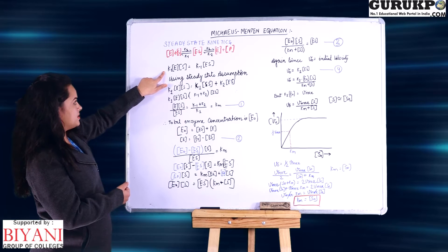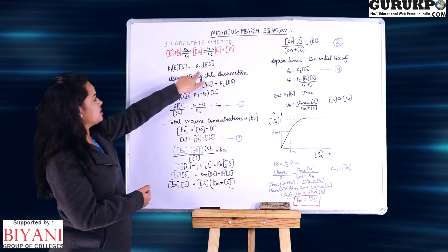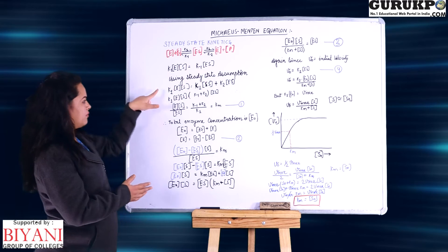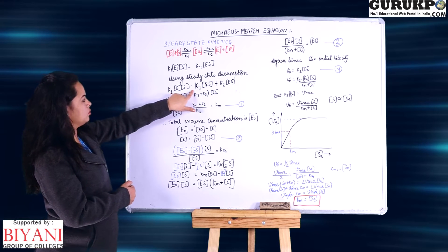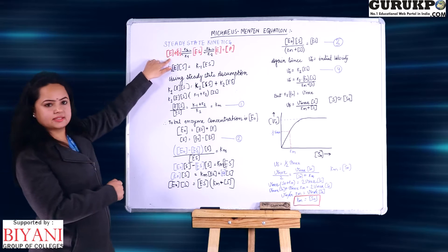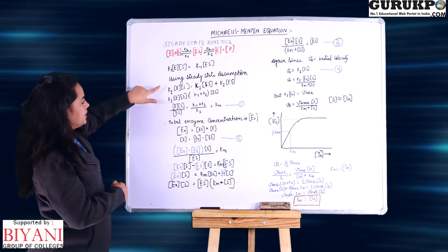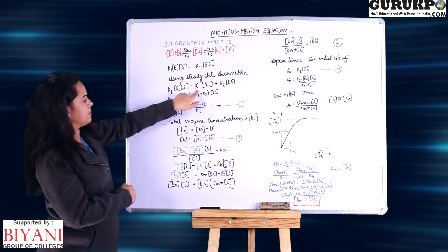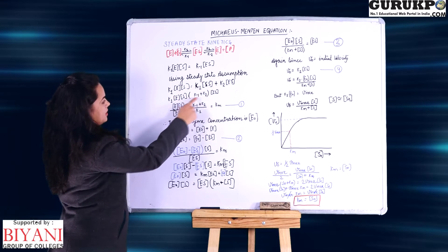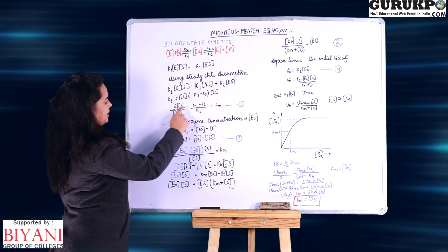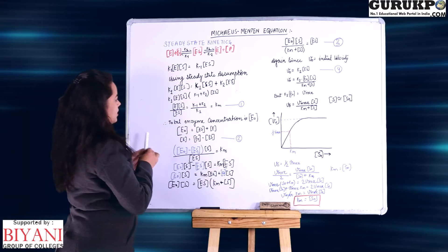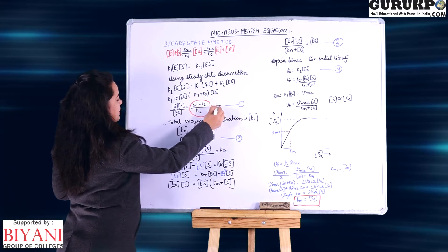We can calculate from this reaction that K1 is equal to the concentration of E and S, and K-1 is the reverse. When we consider the total concentration of all enzyme and substrate, we have: K1·[E][S] = K-1·[ES] + K2·[ES]. In this reaction, enzyme exists in only two forms — either as free enzyme or as enzyme-substrate complex. Taking the terms together: K-1 plus K2 over K1 — this ratio is referred to as Km, the Michaelis constant.